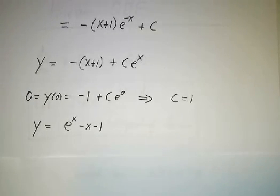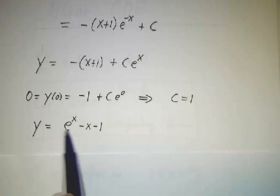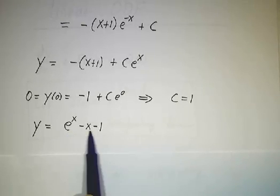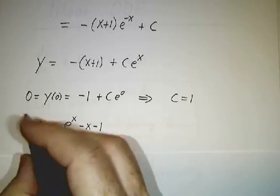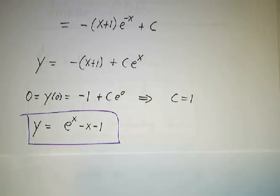We plug that in and we have y = e^x - x - 1 and there's our solution. We can put a box around it and say we're done.